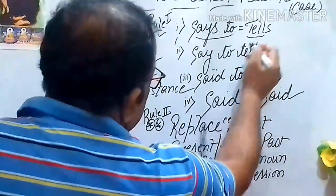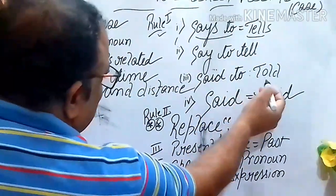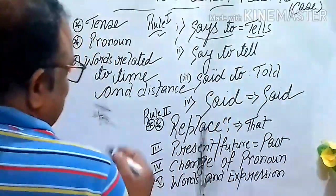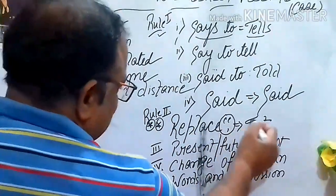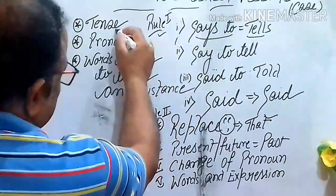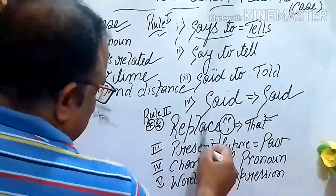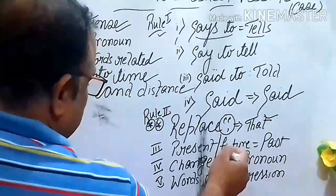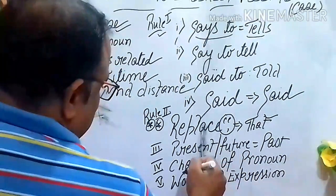The reporting verb changes as follows: 'says to' changes to 'tells'; 'said to' changes to 'told'. The inverted commas are replaced with 'that'. The tense of the reported speech changes — provided the reported speech is not a universal truth or fact.